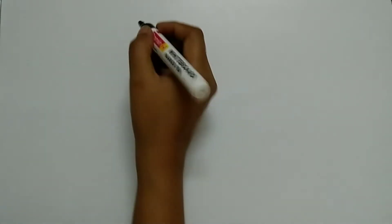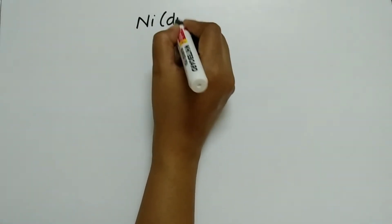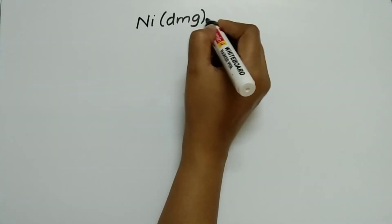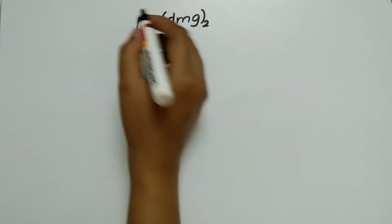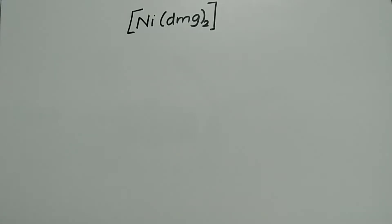The question is find the properties of the complex given according to VBT. According to VBT valence bond theory, the complex given is Ni(DMG)₂. You have to find the properties of this complex based on VBT.